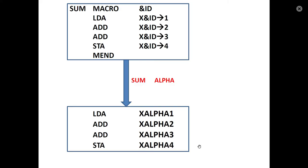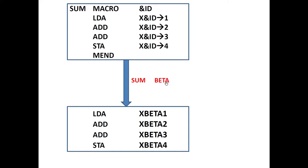This is the concatenation operator. We use the same parameter — for example, when the parameter is ALPHA, we get X_ALPHA1, X_ALPHA2, X_ALPHA3, X_ALPHA4. When the parameter is BETA, we get X_BETA1, X_BETA2, X_BETA3, X_BETA4. This is the concatenation of macro parameters.